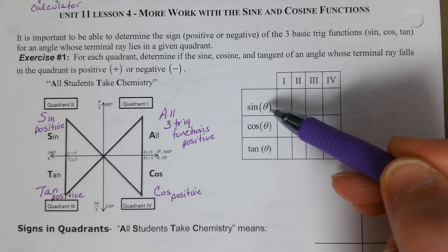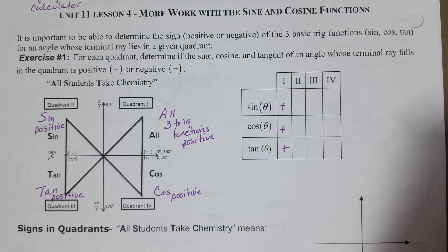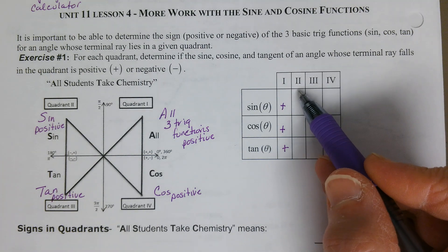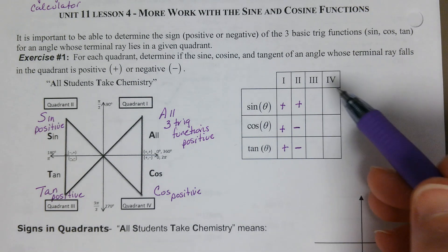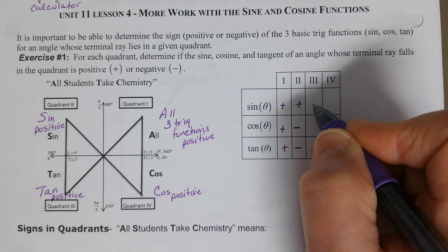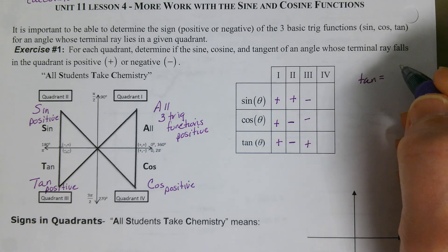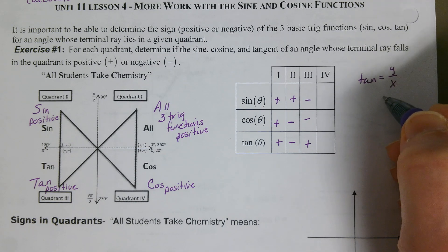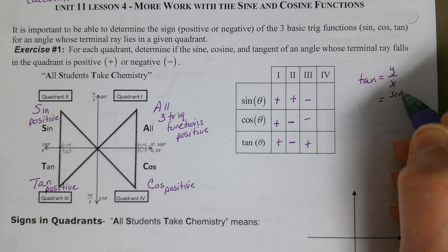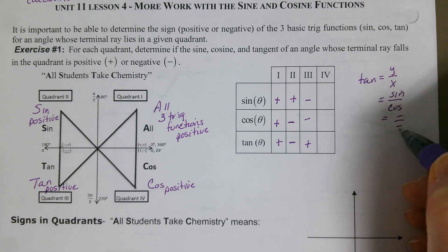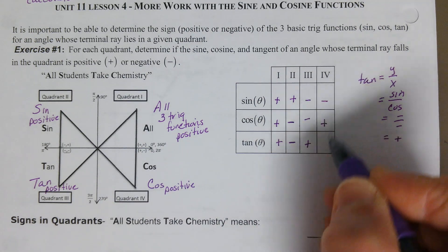So in quadrant one, sine, cosine, and tangent are all positive. In quadrant two, only sine is positive; cosine and tangent are negative. In quadrant three, only tangent is positive; sine and cosine are negative — which makes sense because tangent equals Y over X, so negative over negative is positive. And in quadrant four, cosine is positive; sine and tangent are negative.